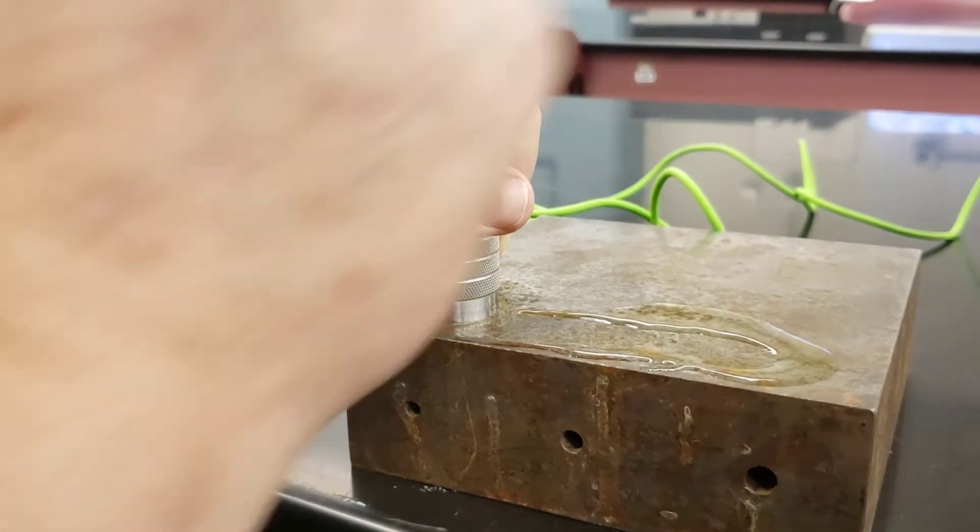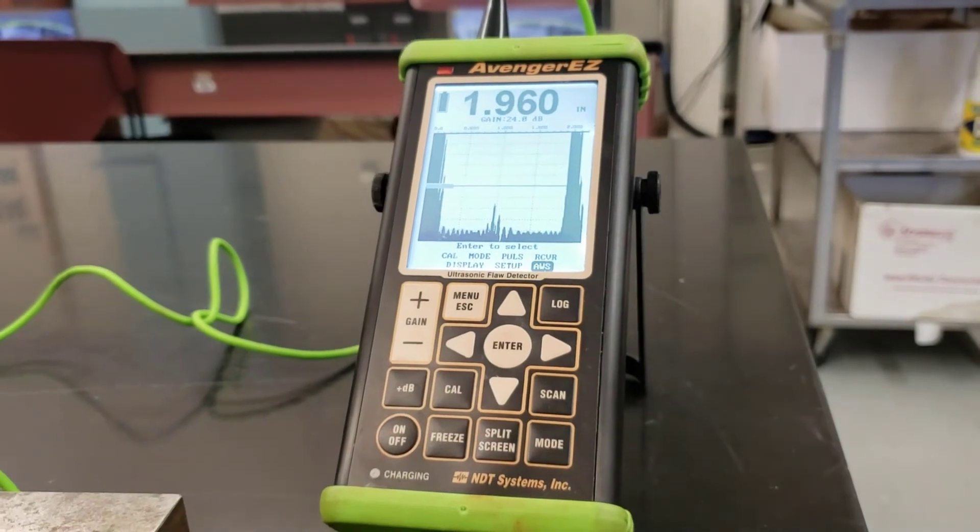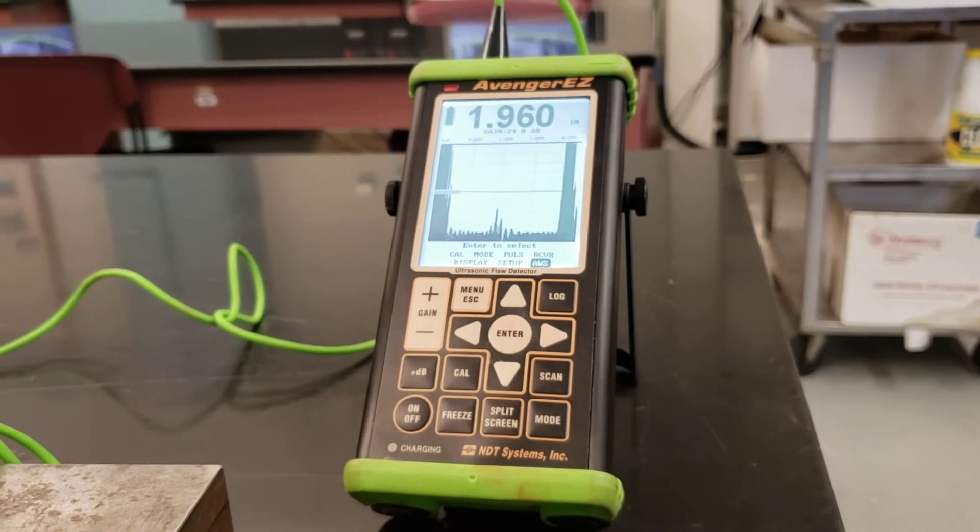So what you're doing is indicating that something between the thickness is interrupting the signal. That could be an impurity. That could be a hole. So we're using this for crack detection.